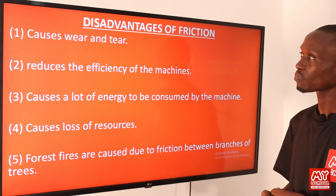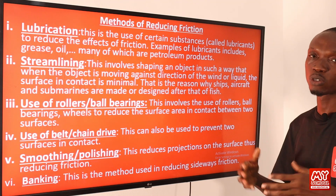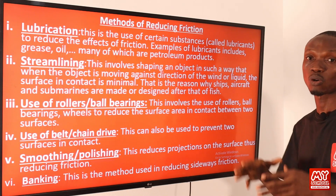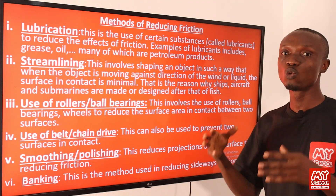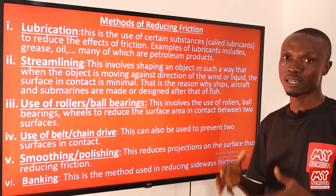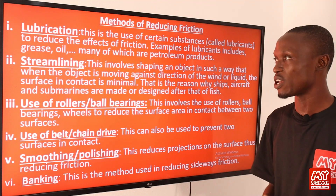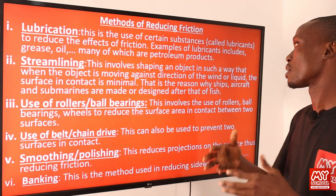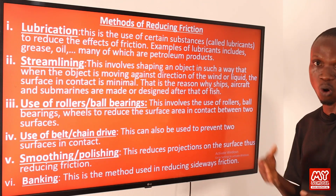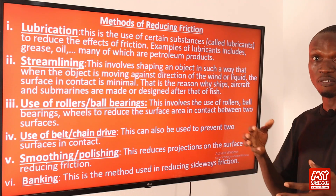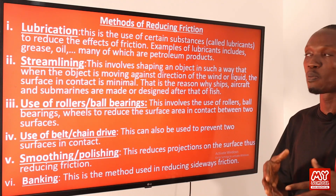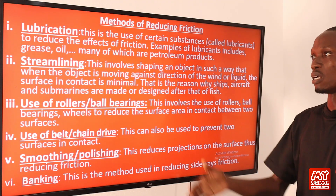Now let's look at methods of reducing friction. The first method is lubrication — this involves the use of substances called lubricants to reduce the effects of friction. Examples of lubricants include grease, oil, graphite, and air. Note that many of these lubricants are petroleum products.